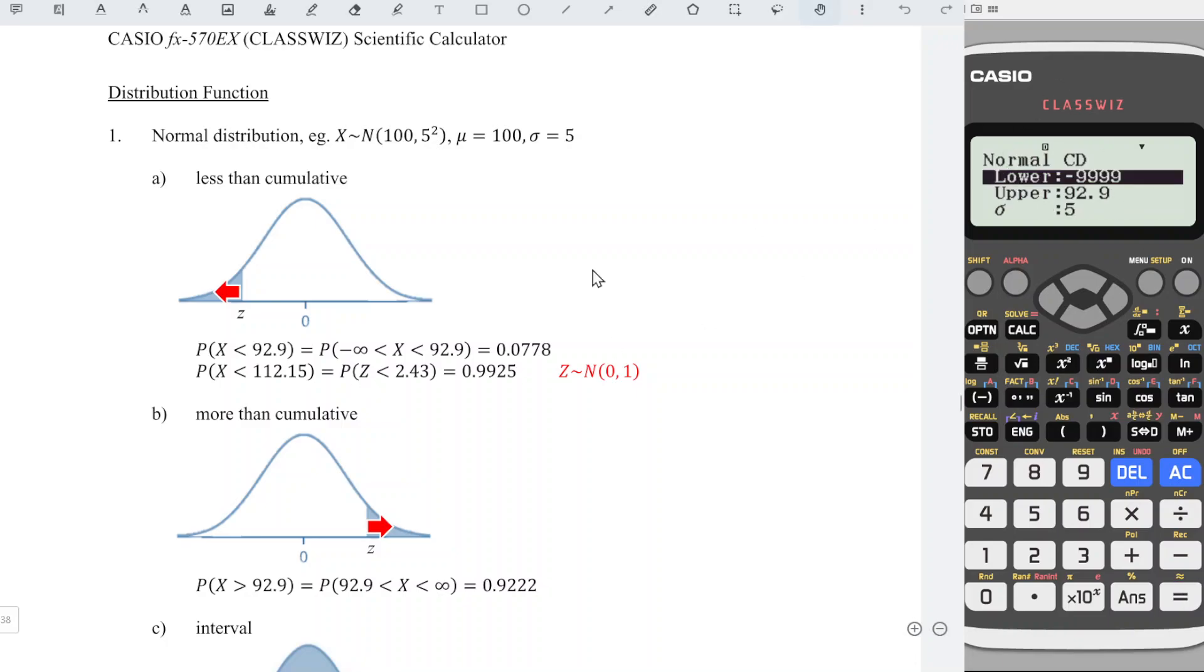For the lower limit, we can ignore since this is also less than cumulative. For upper limit, change to the z-score: negative 1.42. Sigma: be careful since this is standardized value, which means that we have 1 for standard normal distribution. Mu: 0. Press equal. We should obtain the correct probability.